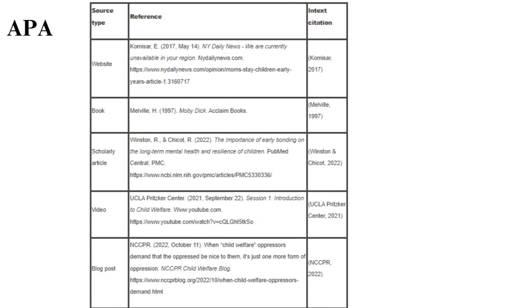2. APA. Originally published in 1929, the American Psychological Association (APA) style targets subjects in the social sciences such as psychology, sociology, anthropology, education, communication, and many more. You may be asked to use the 6th or 7th edition depending on the instructor's preferences.